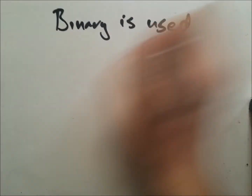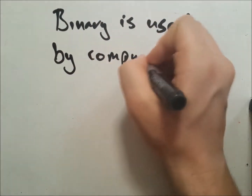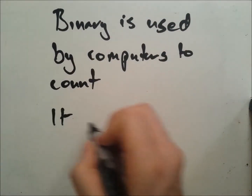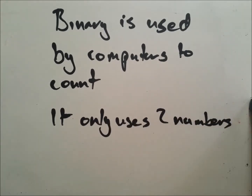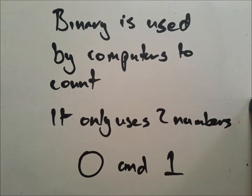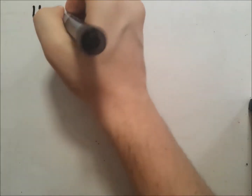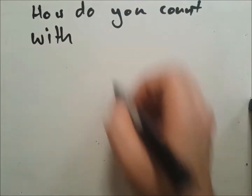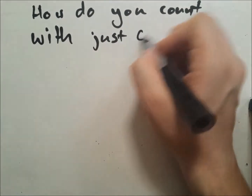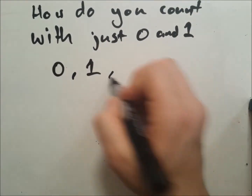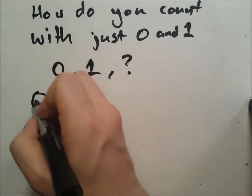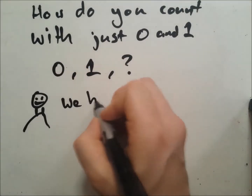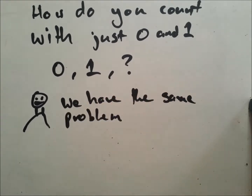Binary is used by computers to count. It only uses two numbers: zero and one. How can you count with just zero and one? Surely we need all of the other numbers as well. Well, humans have the same problem.